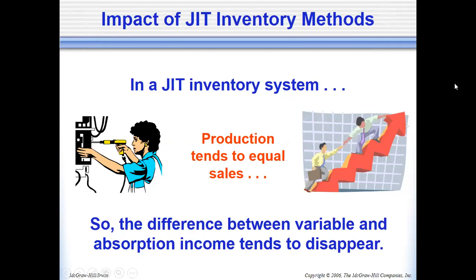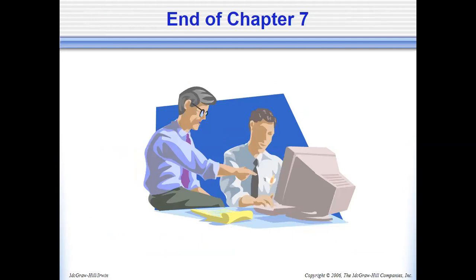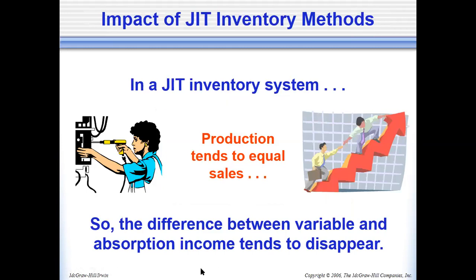If a company uses JIT — just-in-time — inventory methods, there would be no argument between variable and absorption costing in terms of income and reports, because production tends to equal sales. In JIT, products are produced only when there are orders or sales, resulting in zero or minimized inventory levels. Hopefully you've learned something from today's discussion. Thank you very much for listening. God bless.